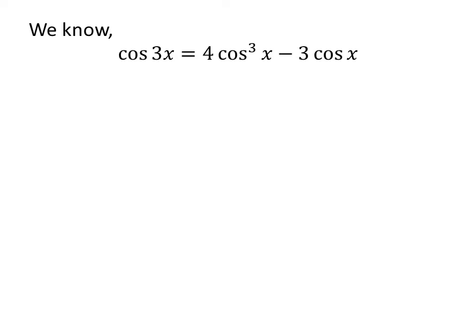As we know, the trigonometric identity cos(3x) = 4cos³(x) - 3cos(x).